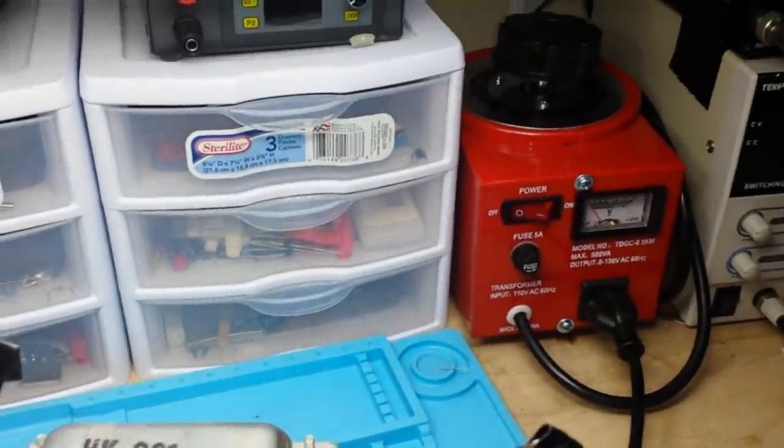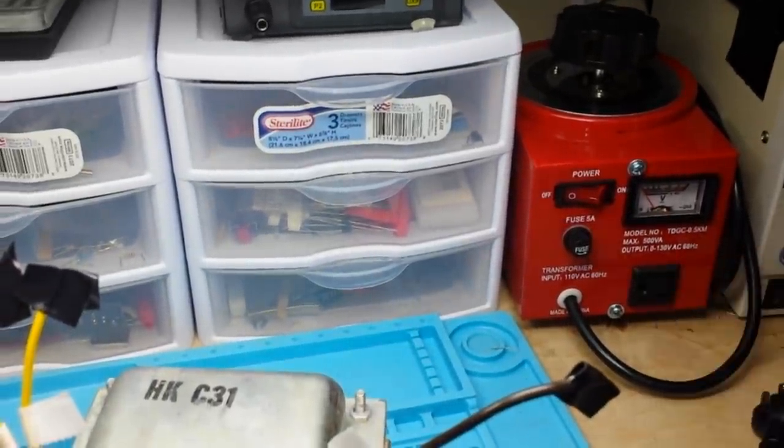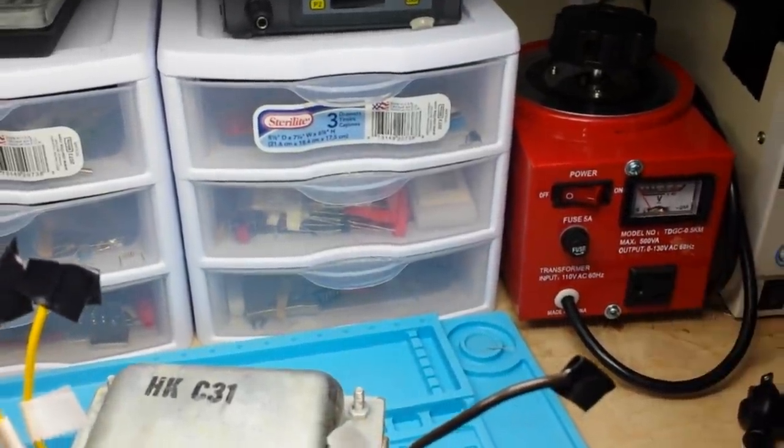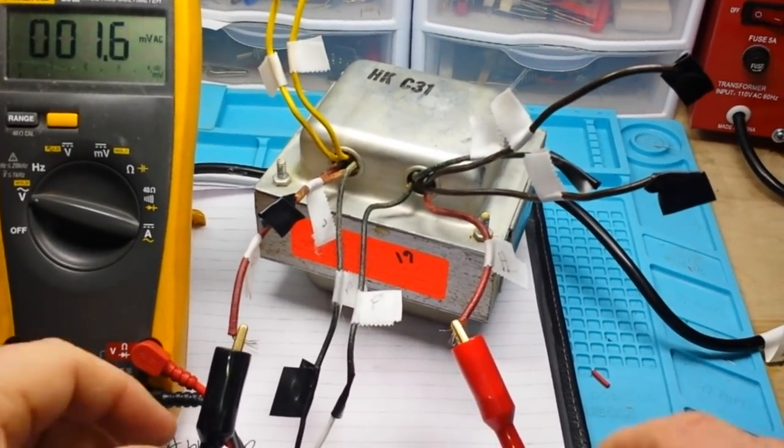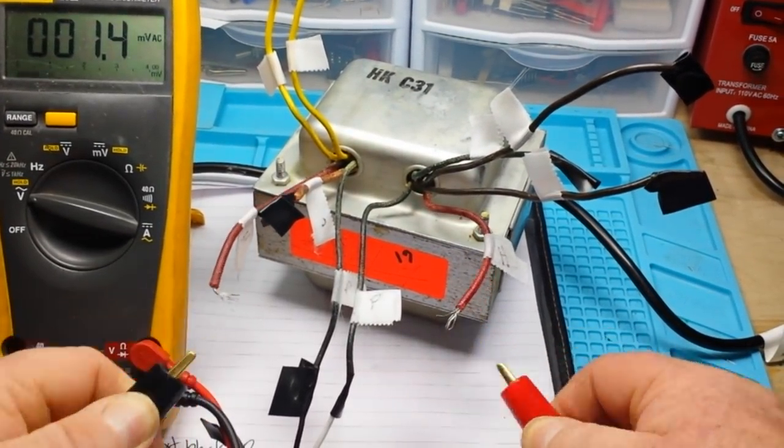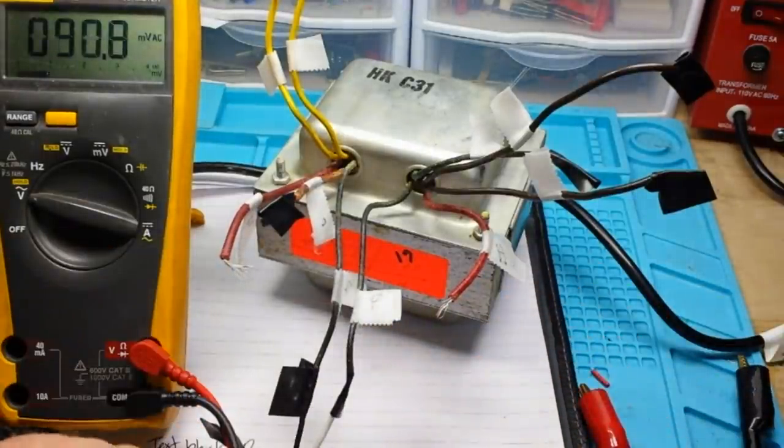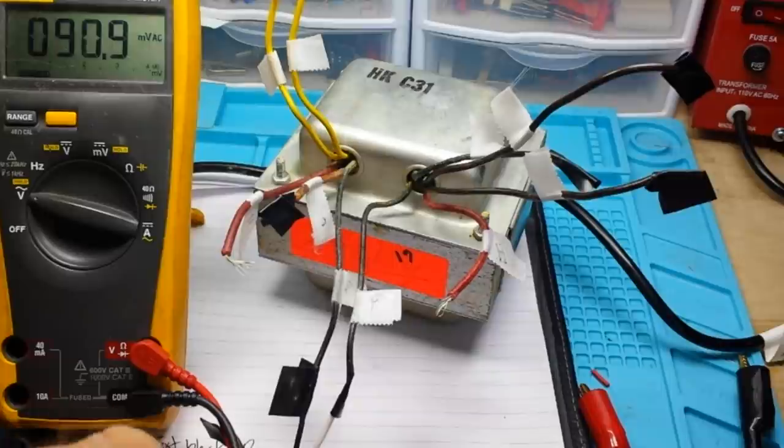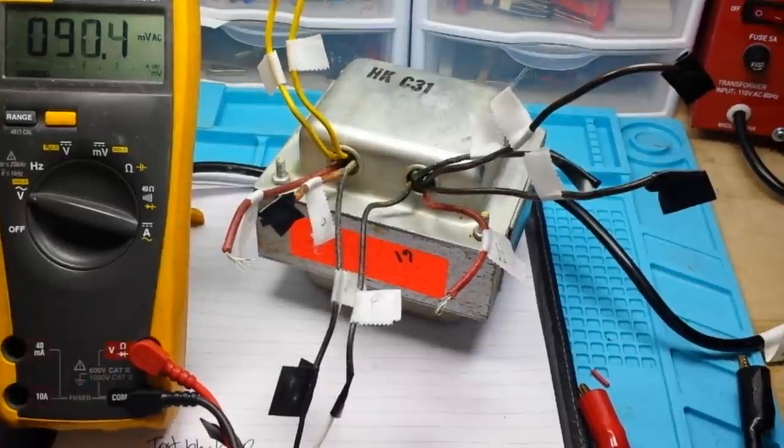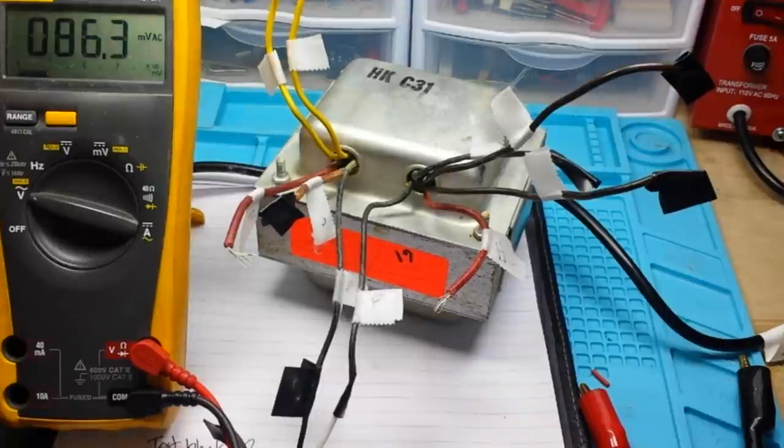I have switched the variac off. I have unplugged the line cord. And we now know what our high voltage is. So we will now insulate those and move on to a different winding.